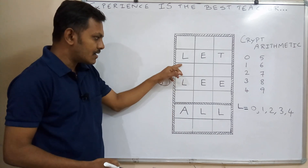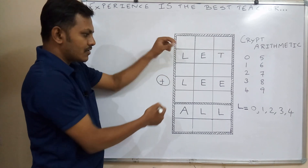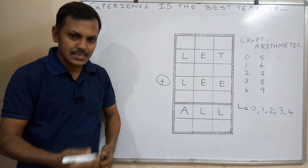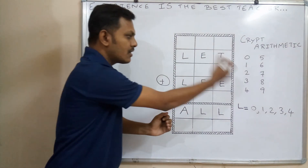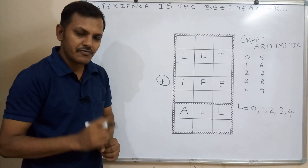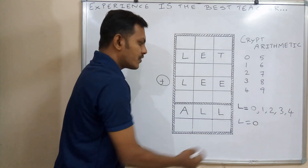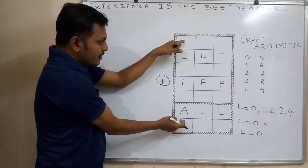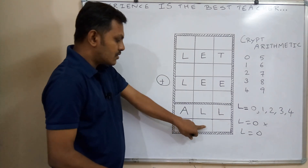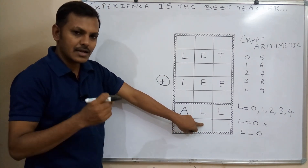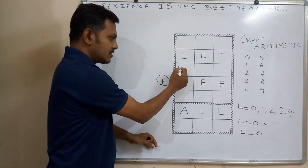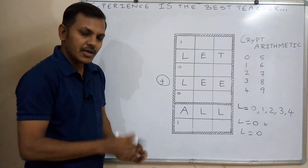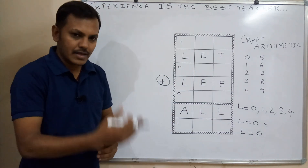Now checking L equal to 0 with carry over. If L equals 0 with carry over, then 0 plus 0 plus 1 gives A equal to 1, satisfying that column. But we must also check the other columns. For this column, we write the trial value in the corner of the box. If a condition satisfies all three columns, we can choose that number.